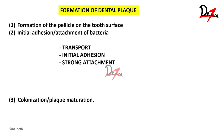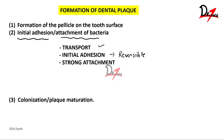The second step of plaque formation is the initial adhesion followed by the attachment of bacteria. This step can be divided into three subcategories. The first is the transport of bacteria onto the surface. The second is the initial adhesion, which is reversible in nature — if we brush during this stage, the bacteria can get dislodged. The third step is the strong attachment, which is an irreversible process — once the bacteria is strongly attached to the tooth, it is very difficult to disrupt.